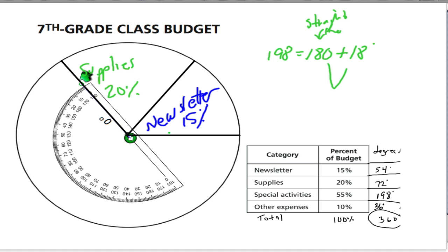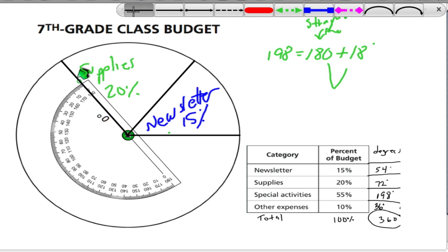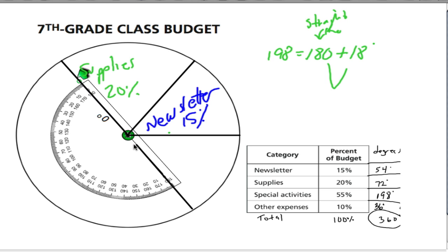So, let's draw that. Here's our protractor, and again, 180 degrees is one of the easiest angles to draw because it's just a straight line. And our straight line is going to go right along the zero, right to the center. Now, that's 180 degrees.